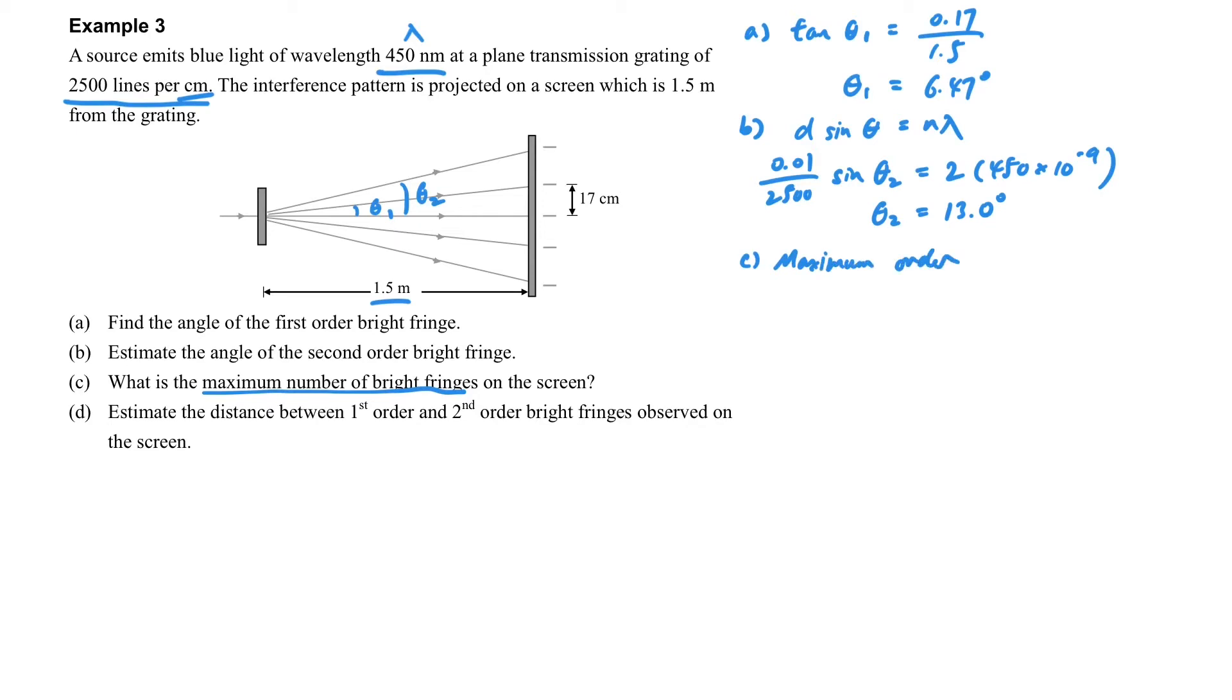The other one - maximum order of the bright fringe that can be observed on the screen. Just remember the maximum order, the trick here is 90 degrees. So we can get n times lambda, we can get the n here. Then what is the maximum order? It is 8 because 90 degrees sets the margin for us so it won't reach ninth order.